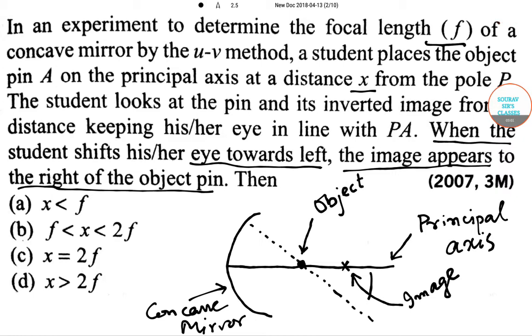When eye is moved to the left, then the image actually shifts towards the right. Hence, the object actually lies between the focus and the center of curvature. But we already know that the radius of curvature R is equal to 2f.